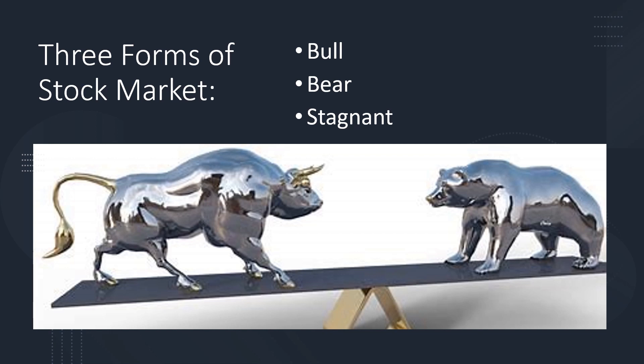A stock market movement can only take three forms. Bull markets are times in which prices normally rise as the result of players' positive outlook for the future. Bear markets are times in which prices typically fall as a result of players' negative outlook of the future. And stagnant markets are those in which there is neither a drop nor an increase in overall prices.